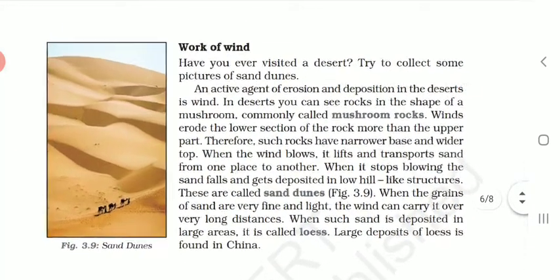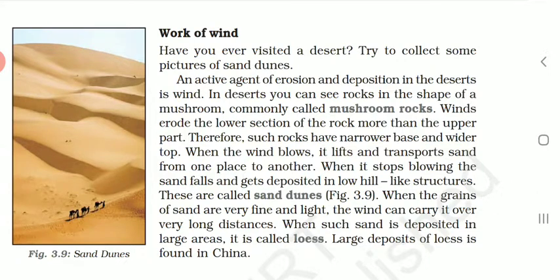The next and last point is the work of wind. Have you ever visited a desert? An active agent of erosion and deposition in the deserts is wind. In deserts, you can see rocks in the shape of mushrooms, commonly called mushroom rocks. Winds erode the lower section of the rock more than the upper part; therefore such rocks have a narrower base and wider top. When the wind blows, it lifts and transports sand from one place to another. When it stops blowing, the sand falls and gets deposited in low hill-like structures called sand dunes.